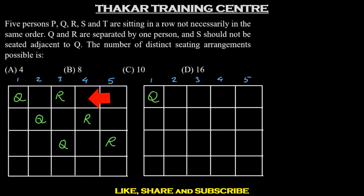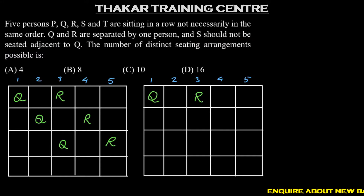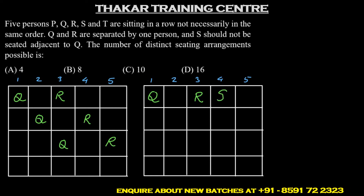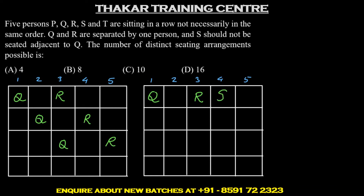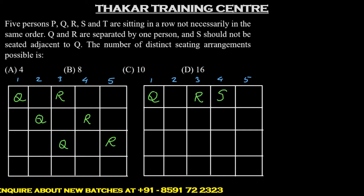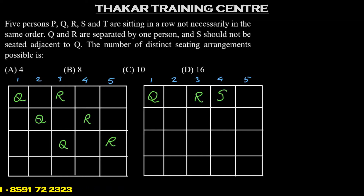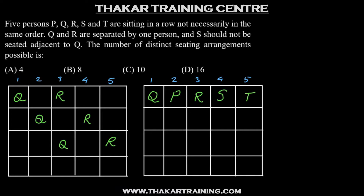Suppose Q and R occupy positions 1 and 3. The second condition says that S should not be seated adjacent to Q, so S cannot occupy position 2 in this case. One possible arrangement would be that S occupies position 4. Then we have two persons P and T which can occupy either position 2 or 5, giving two arrangements.